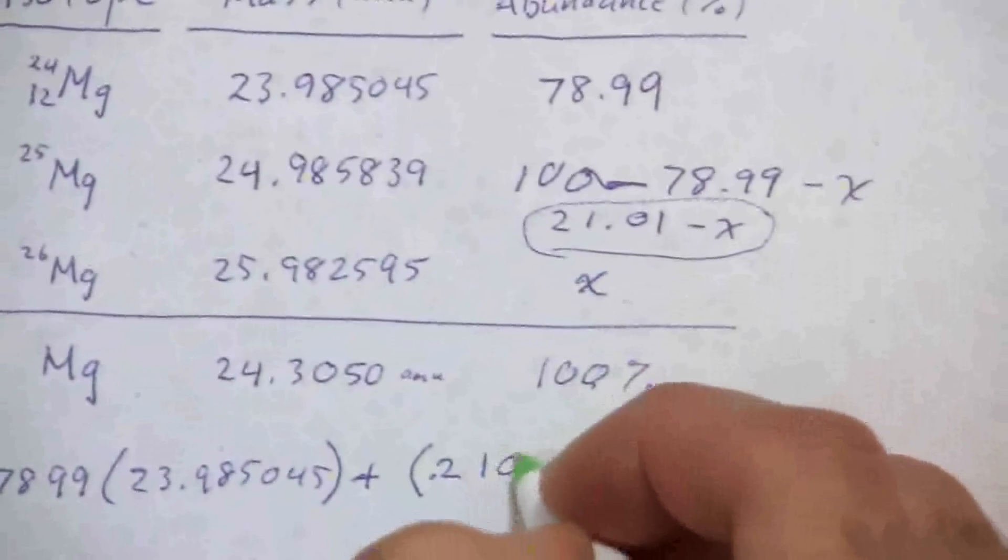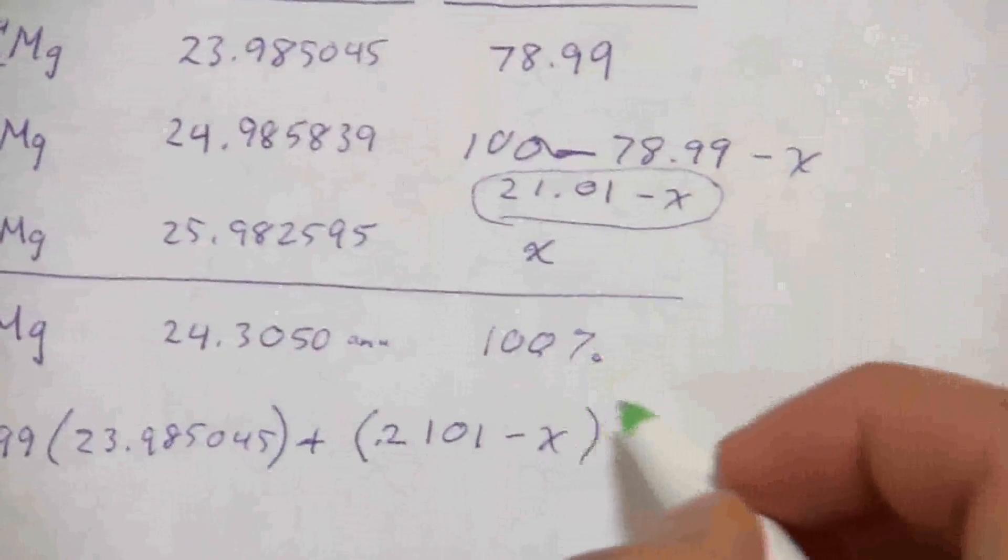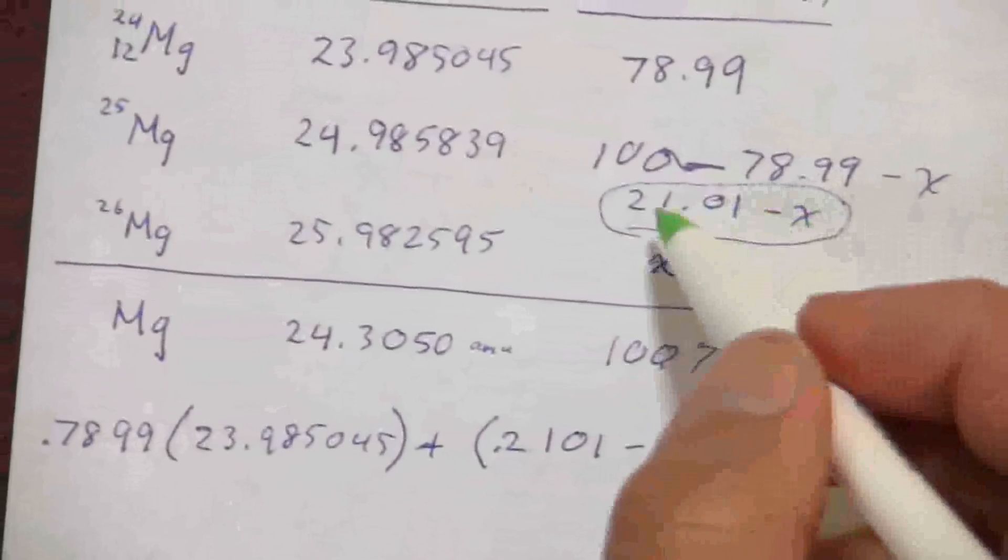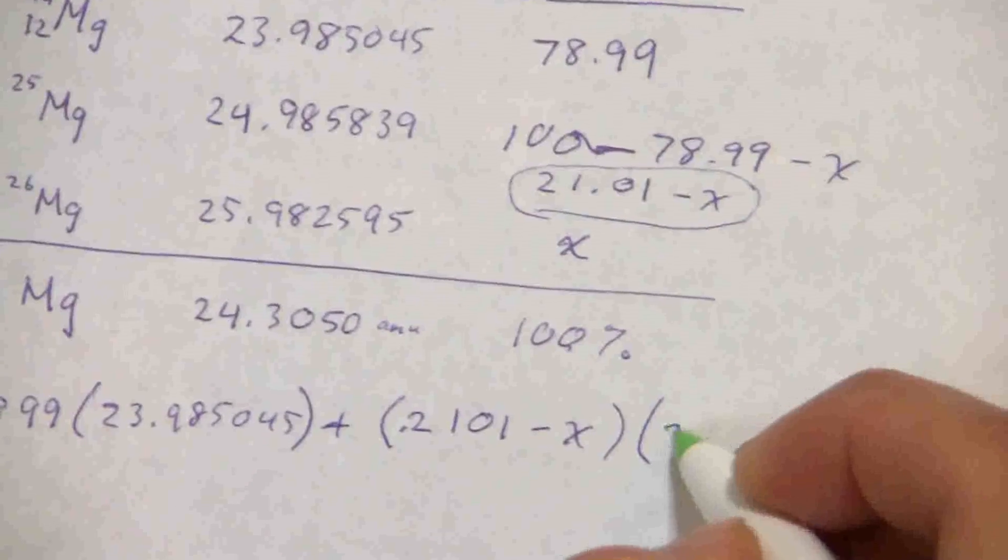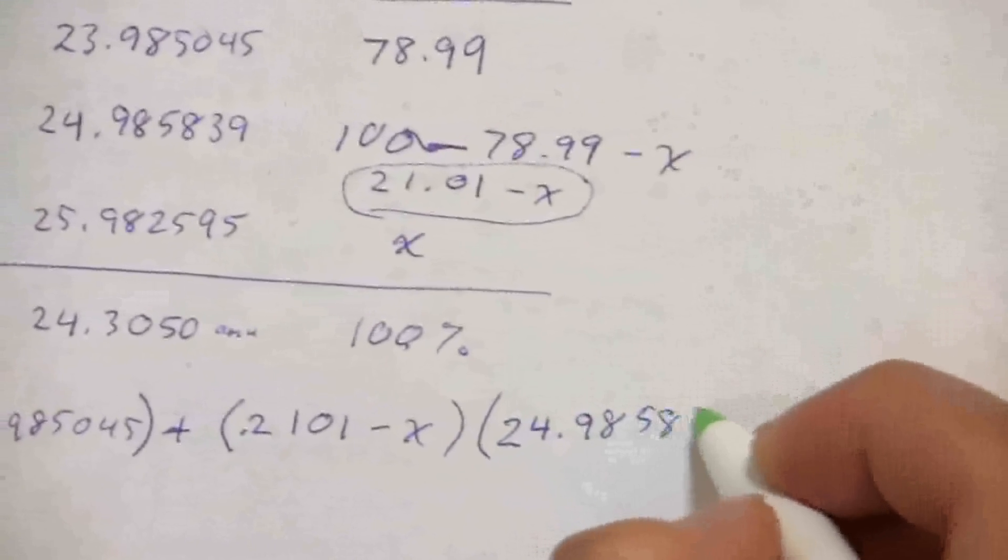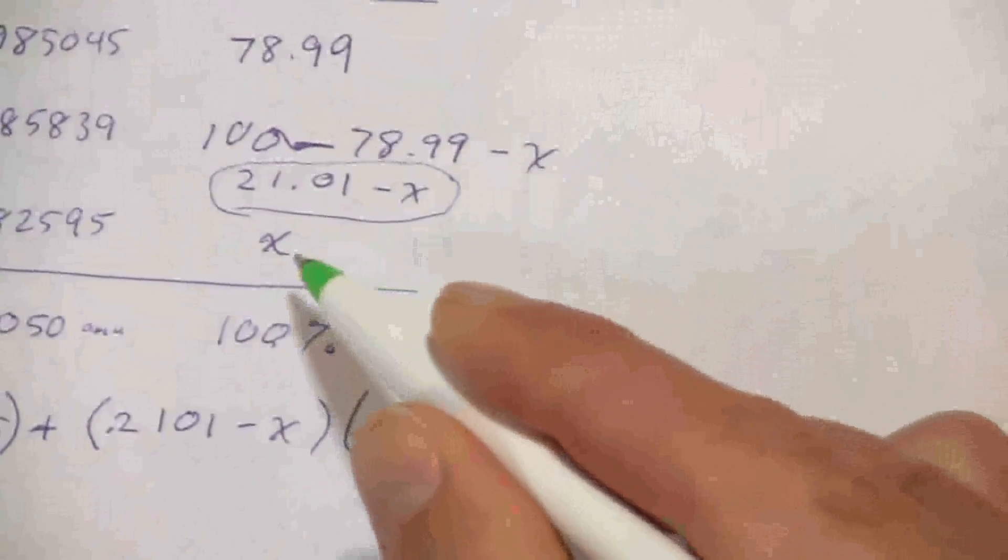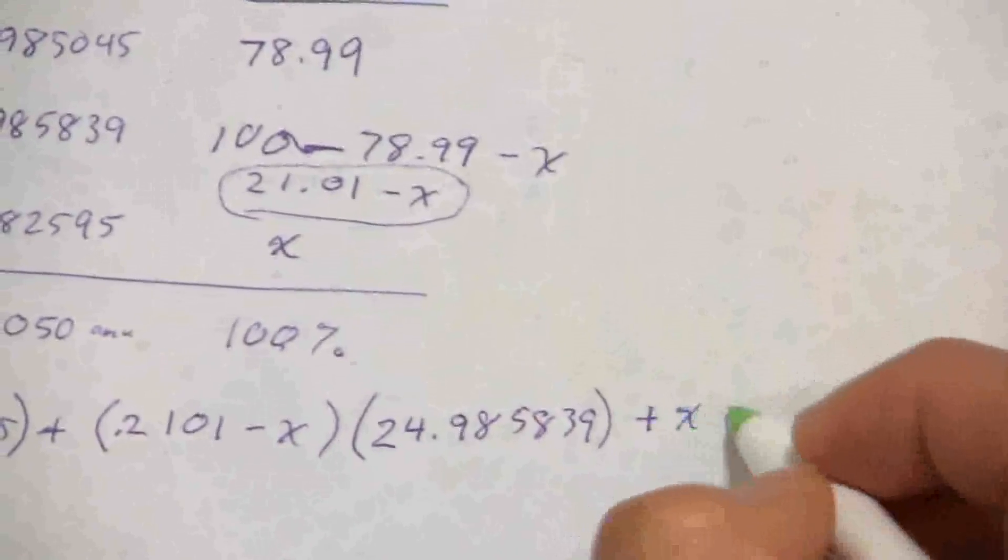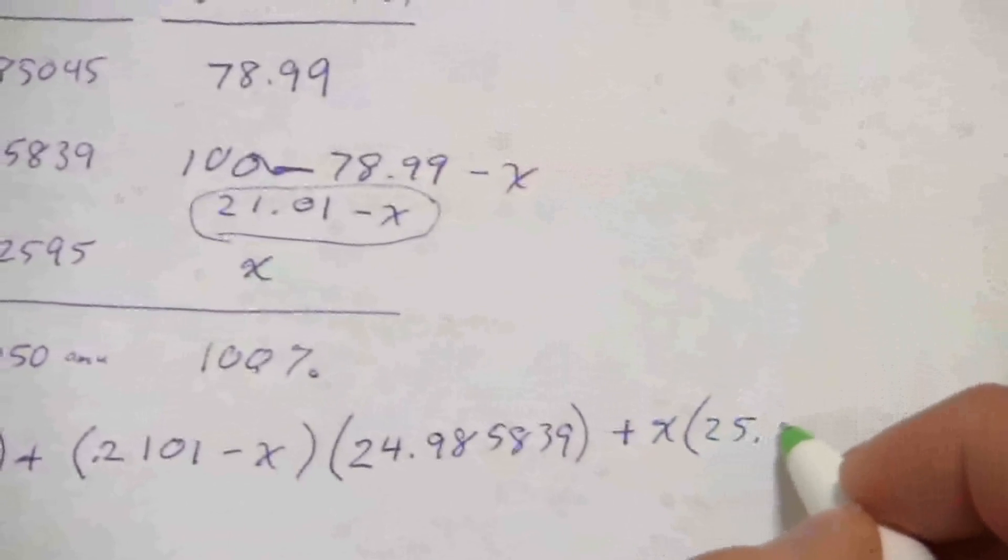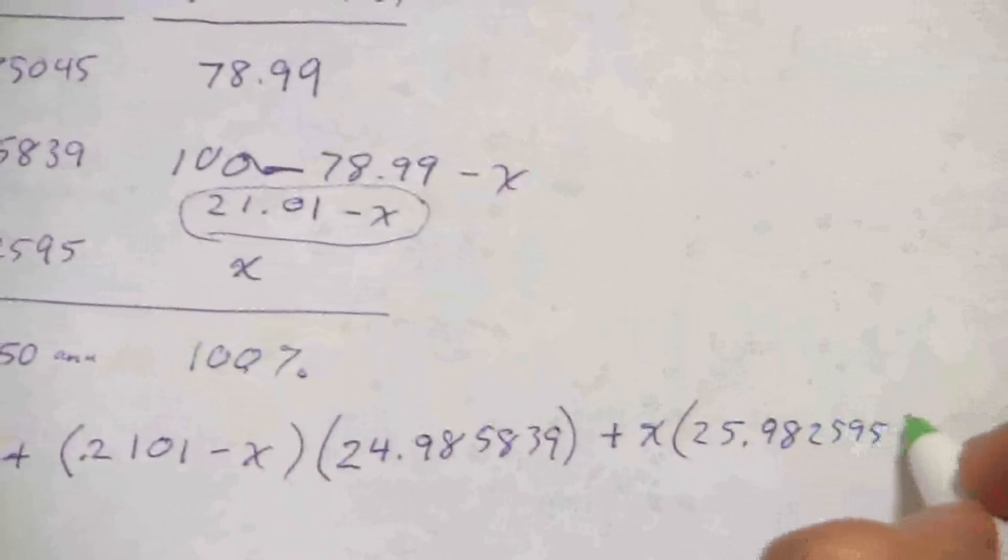And that weight times 24.985839, and then I have my third one, which its weight is just x times 25.982595.